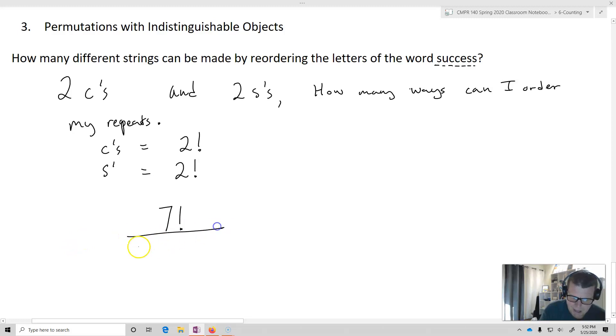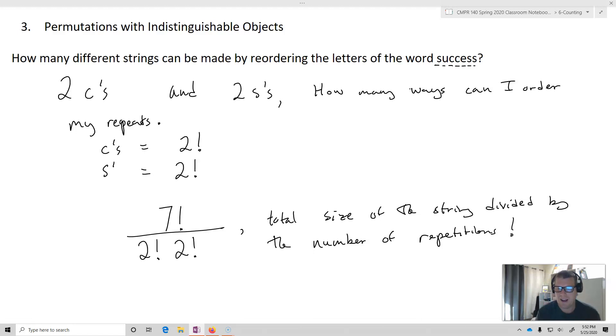So divided by, and I'm going to divide out all the different ways that I can order the S's and the C's. So divided by two factorial, divided by two factorial. And that is the number of different strings. So basically what I'm doing here is the total size of the string divided by the repeated numbers, the number of repetitions factorial. We'll talk about it in just a second. I'll actually synopsize it into a theorem in just a moment.